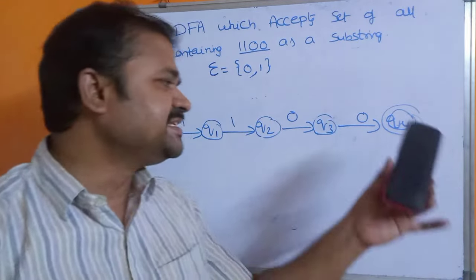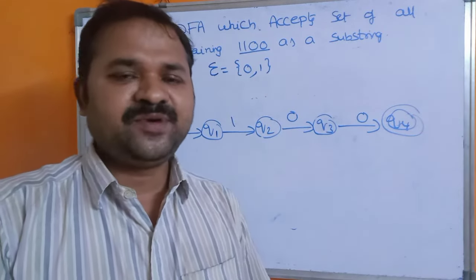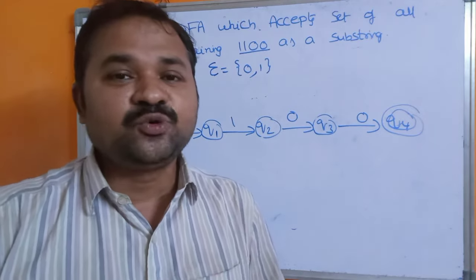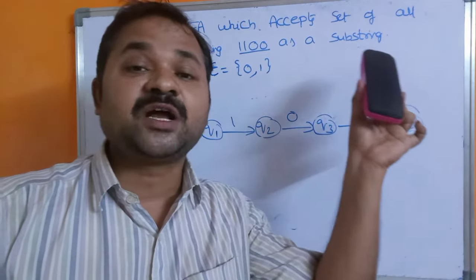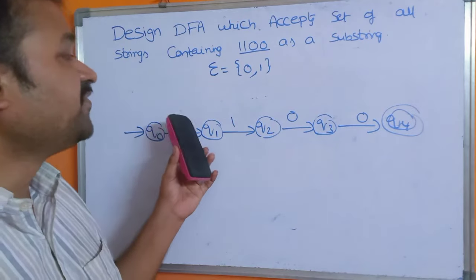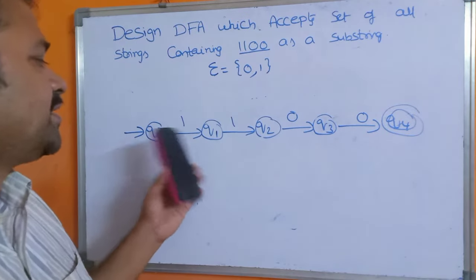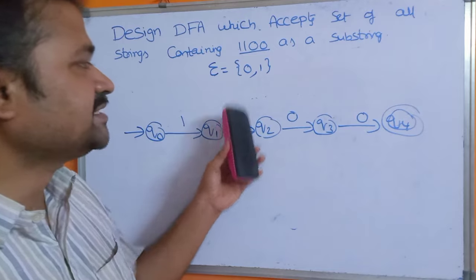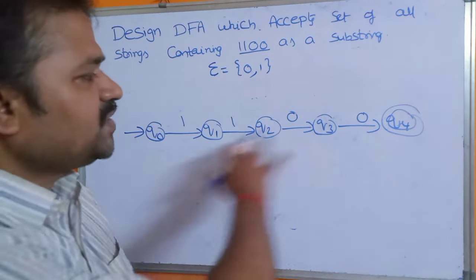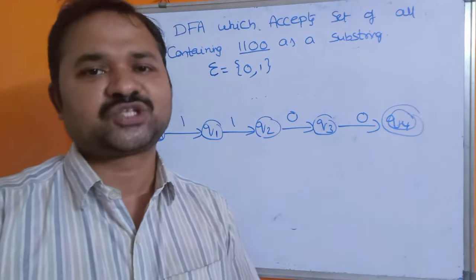Now let us check whether this is a correct DFA. This is not a correct DFA. Why? Because in a DFA, each state must use all the symbols present in the alphabet. But on Q0, only 1 is used, so we have to apply 0 on Q0. On Q1 also, only 1 is used, so we have to apply 0 on Q1. Likewise, we have to apply the remaining symbols on the corresponding states.